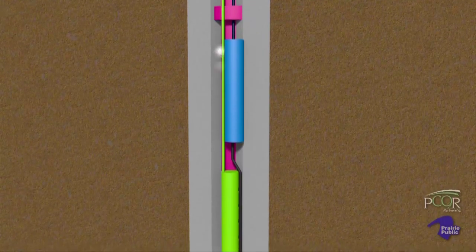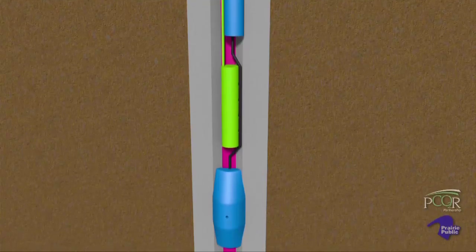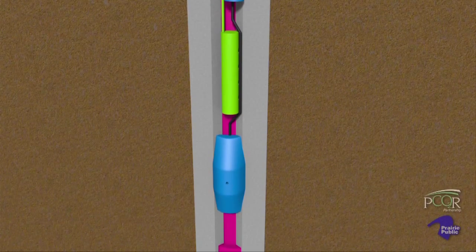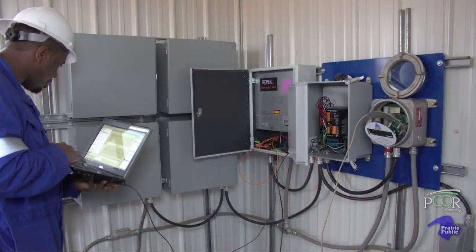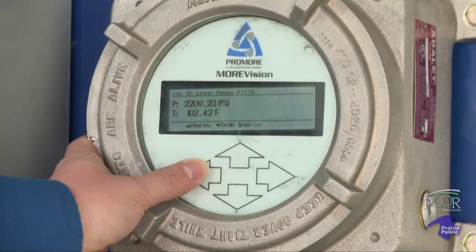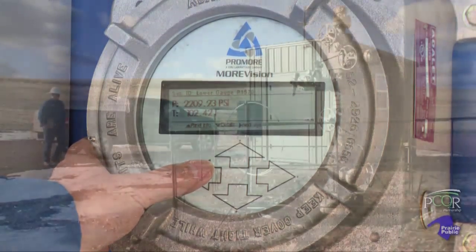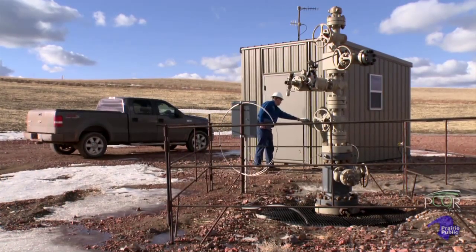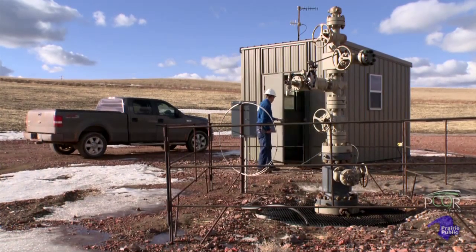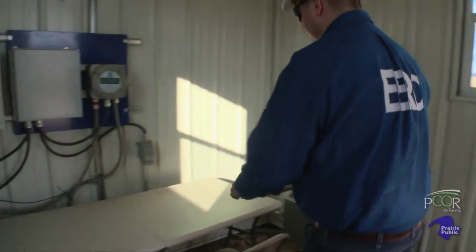Should perf charges fail to fire, the pressure pad will continue to collect pressure data. Successful perfing of the tube, however, bypasses the pressure pad. In order to confirm perforation, both the DTS and pressure temperature gauges are powered up and recording during perfing operations. Completion of the perfing and final surface installation of the PDM data acquisition system mark the commencement of monitoring and data logging operations.